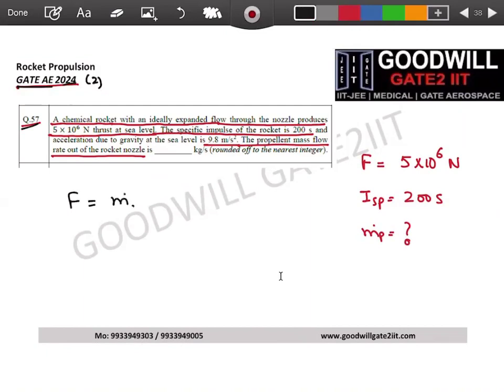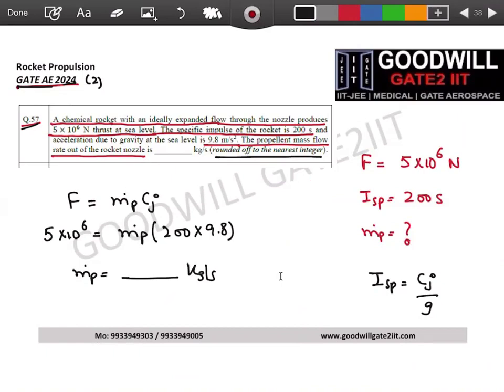Thrust is nothing but equals to m dot p into cj. Thrust is 5 into 10 to the power 6, m dot p and you know what is cj right? Isp is cj divided by g, so you can simply take 200 multiplied by 9.8. Solve this and tell me m dot p, give me your answer in kg per second to nearest integer.